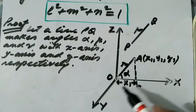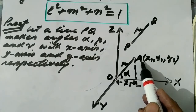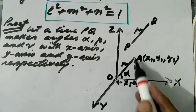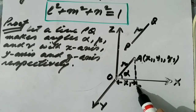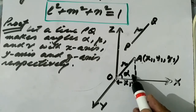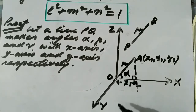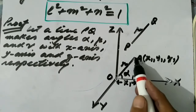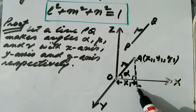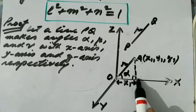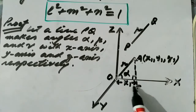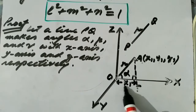If PQ makes angle alpha with the x-axis, OA will also make angle alpha with the x-axis. If the length of OA is R, we draw OA equal to PQ and parallel to PQ. Now let the coordinates of A be (X1, Y1, Z1). Let us drop a perpendicular from A to OX — let it be L. So OLA is a right-angle triangle, and OL must equal X1, since OL is the projection of OA on the x-axis.